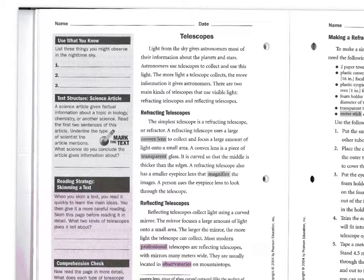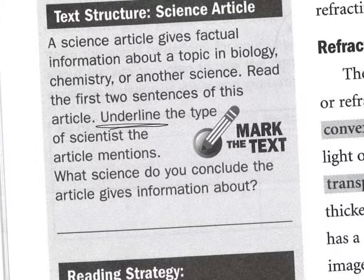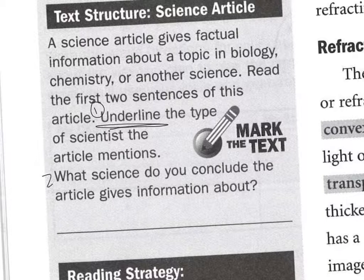Read the first two sentences of this article. Underline the type of scientist the article mentions. So you're given a direction here to underline the type of scientist the article mentions. What science do you conclude the article gives information about? First do this, and then this, and you write your answer there.